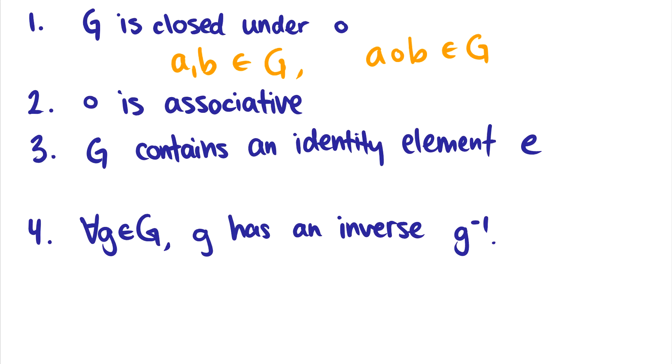The group has to contain one identity element, e. So in other words, if we have e and we use the operation with a, it's the same thing as a operation e, which just gives us a back.